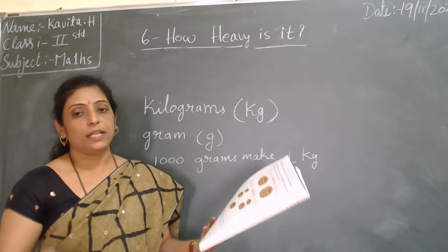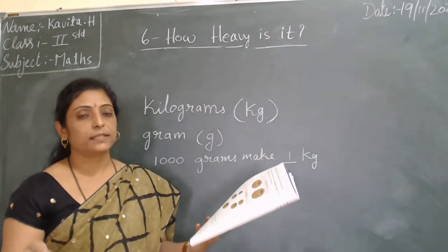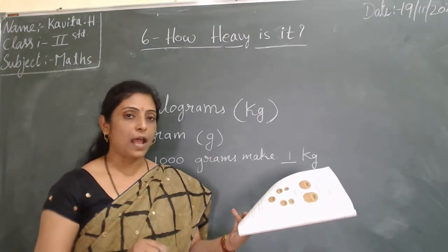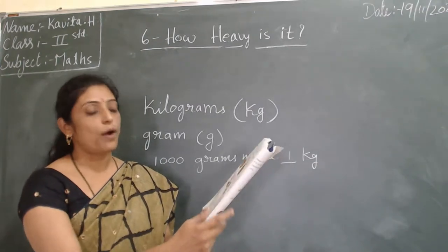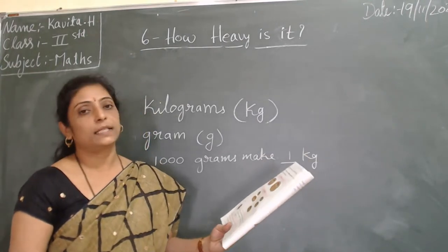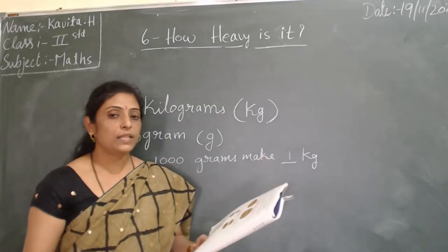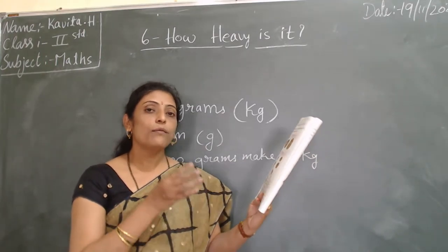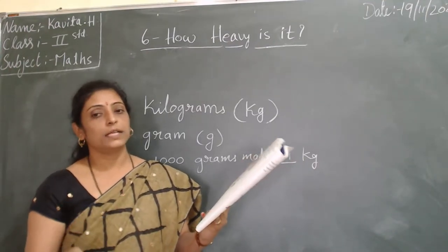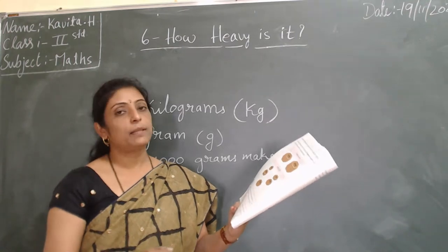When fixed measures like kilograms or grams are used to find the mass of objects, the answer will be the same even if different people measure them. If one person measures 1 kg, another person measuring the same object will also get 1 kg. If 200 grams, another person also gets 200 grams — the answer will be the same.